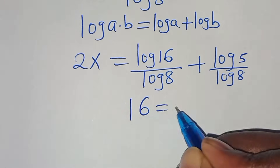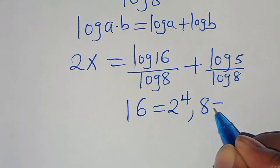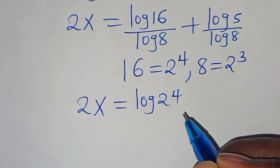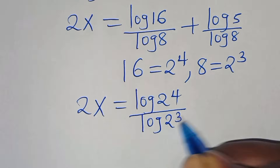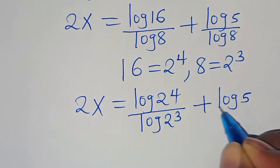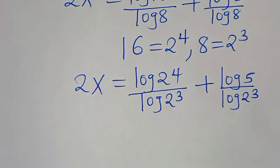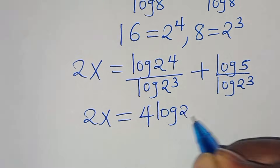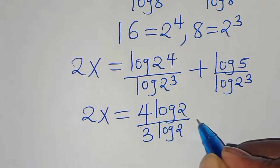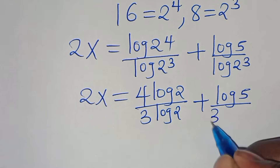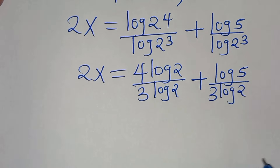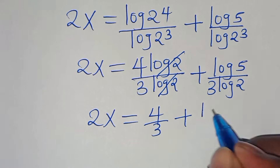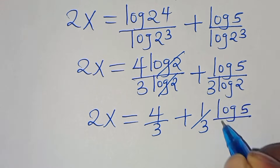We can express 16 as 2 to the power of 4, and we can express 8 as 2 to the power of 3. So we have 2x equals log(2^4) divided by log(2^3), then plus log(5) divided by log(2^3). Applying the power property, we have 2x equals 4·log(2) divided by 3·log(2), then plus log(5) divided by 3·log(2). Simplifying log(2) and log(2), we have 2x equals 4/3 plus (1/3)·log(5)/log(2).